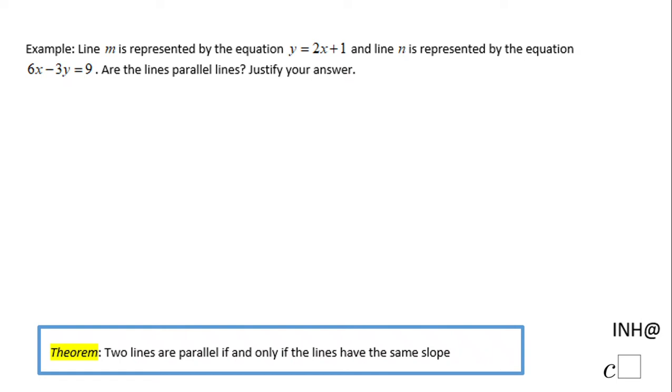Welcome or welcome back to NHelpAtCSquared. In this example we have line M which is represented by the equation Y equals 2X plus 1, and line N which is represented by the equation in the standard form 6X minus 3Y equals 9. We are asked if these two lines are parallel lines and we need to justify our answer.